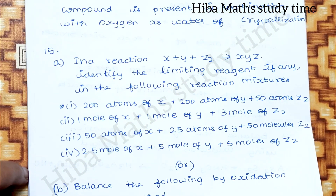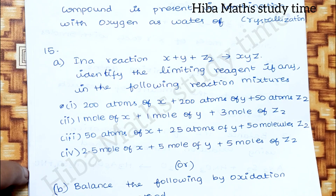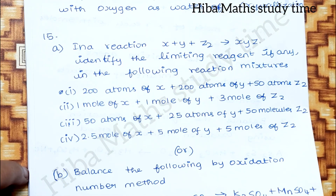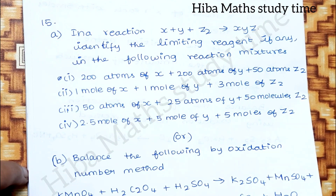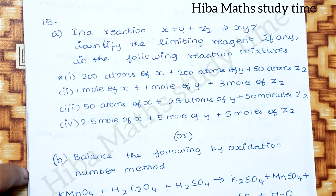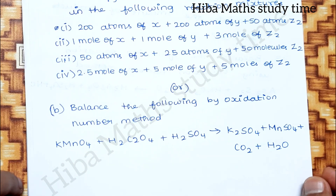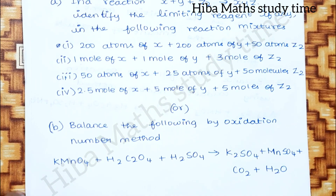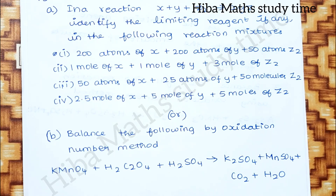Question 15: for the reaction XYZ2 = XYZ, identify the limiting agent. If you look at the 4th question, these types of questions will possibly appear in the question paper. If you have any questions, please comment and please share this video. Thank you so much for watching.